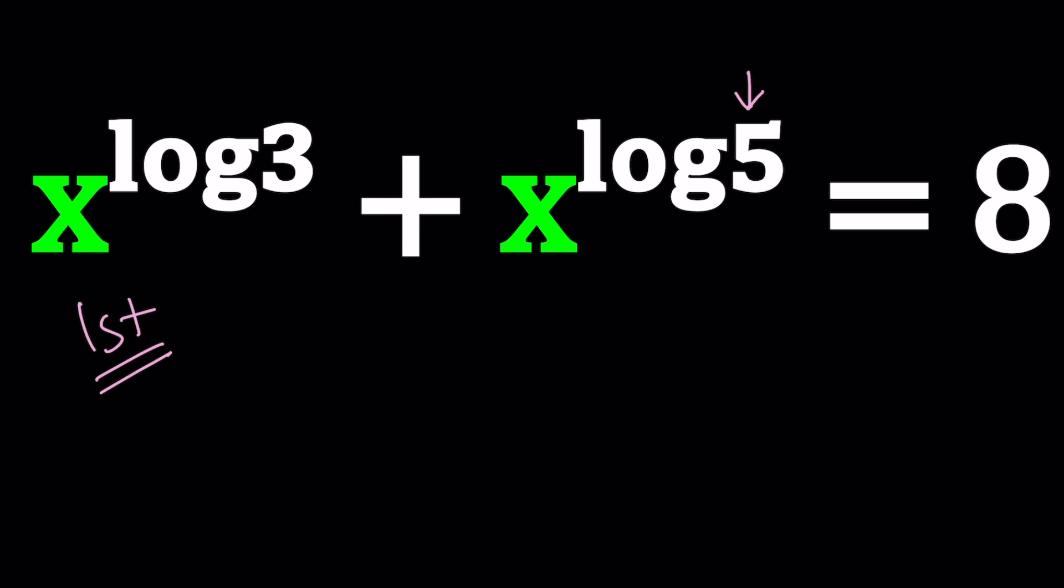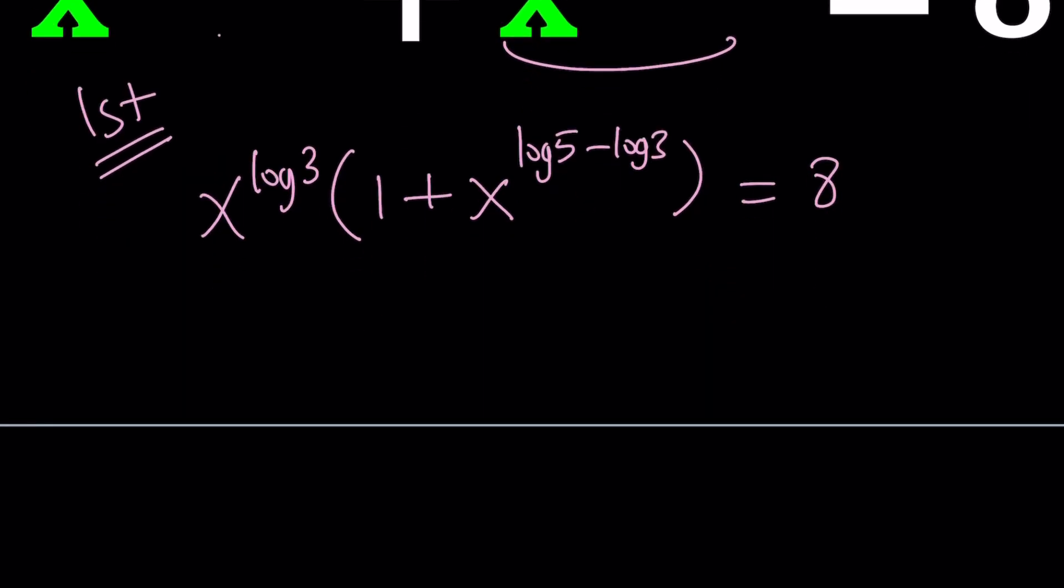So could we just factor out x to the power log 3? That should give us 1 plus x to the power log 5 minus log 3, equals 8. We could probably write this as log of 5 thirds, but that's not going to help us a lot.